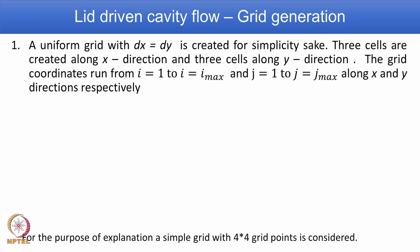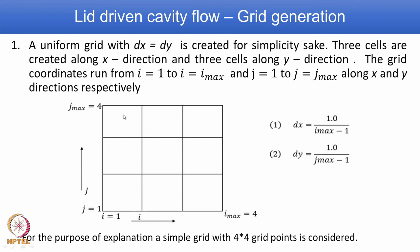For explanation purposes, we take a simplified structured uniform grid with 4 by 4 grid points — 4 in the x direction and 4 in the y direction. We define a uniform grid such that Δx = Δy. Three cells are created along the x direction and 3 cells along the y direction. Grid coordinates run from i = 1 to i = imax and j = 1 to j = jmax along x and y respectively.